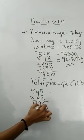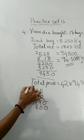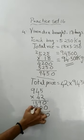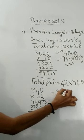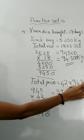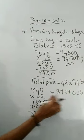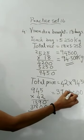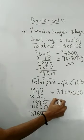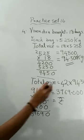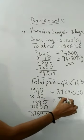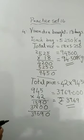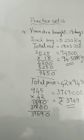Multiplying 945 into 42: working through the steps gives 39690. But the actual number was 94500, so two more zeros are added making it 3969000, and then placing 3 decimal places gives 3969.000, which is 3969 rupees. So the total cost for 94.500 kg at 42 rupees per kg is 3969 rupees.